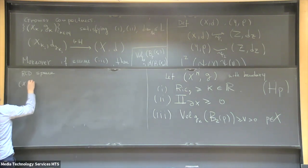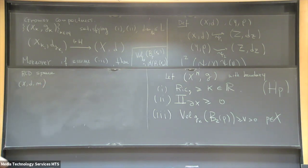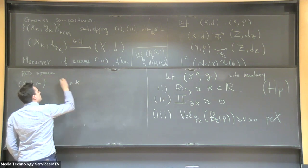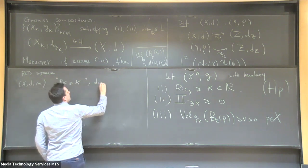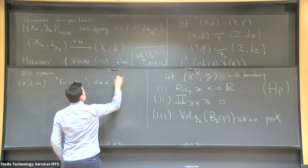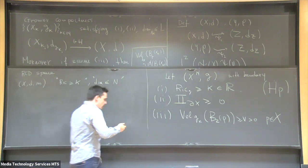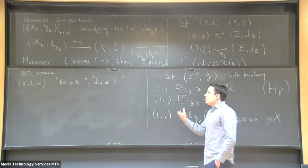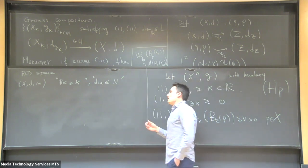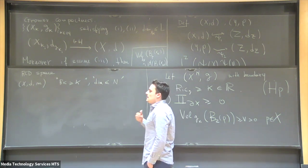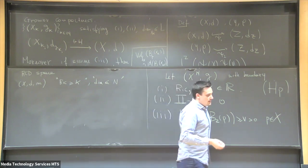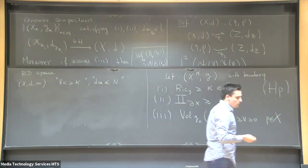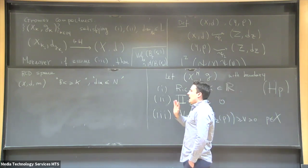At the very informal level, an RCD space is a metric measure space X, d, m which satisfies a synthetic notion of having Ricci curvature bounded below by K and dimension bounded by N. This notion is given in a synthetic way, meaning we are not appealing to smooth approximating sequences; instead, we look at intrinsic properties of the metric measure structure. More precisely, the notion comes by asking for convexity-type properties of suitable energies in the space of probability measures over X, endowed with the Wasserstein distance from optimal transport.